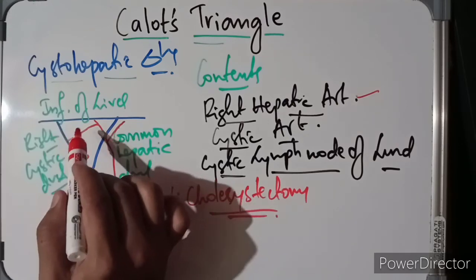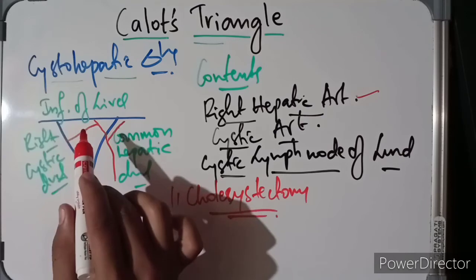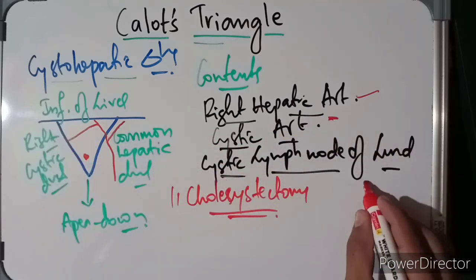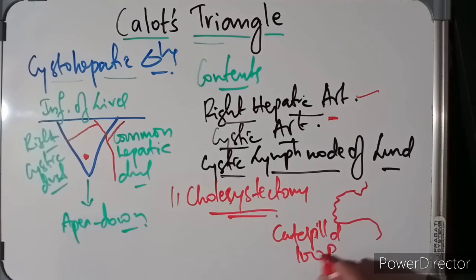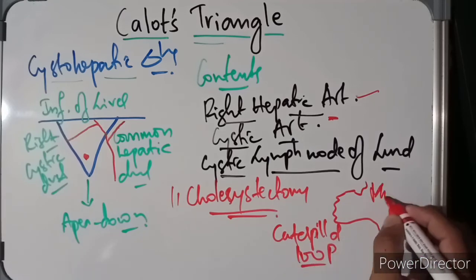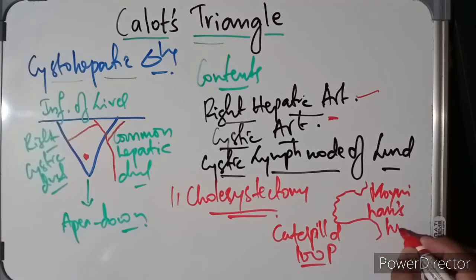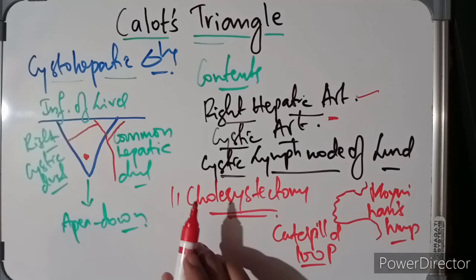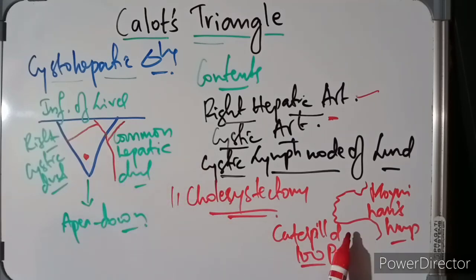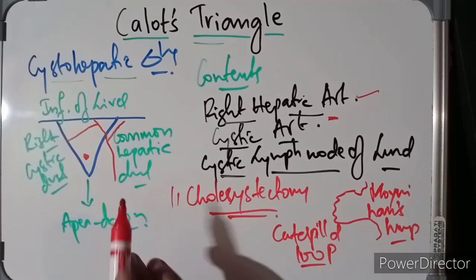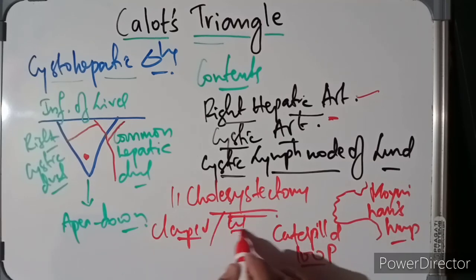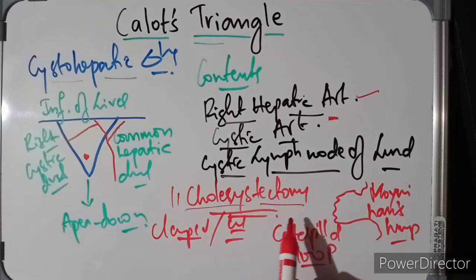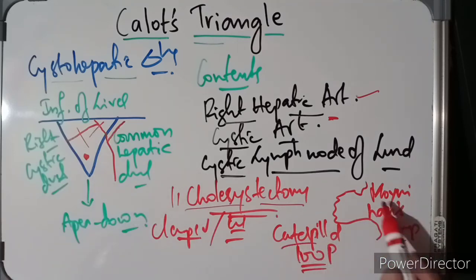This occurs because the right hepatic artery in this triangle can present with a caterpillar-like loop, known as the Moynihan's hump. This caterpillar-type loop may be inadvertently clamped or cut during surgery, leading to profuse bleeding. The profuse bleeding during cholecystectomy is mainly because of damage to the cystic artery or to the right hepatic artery presenting as the Moynihan's hump.